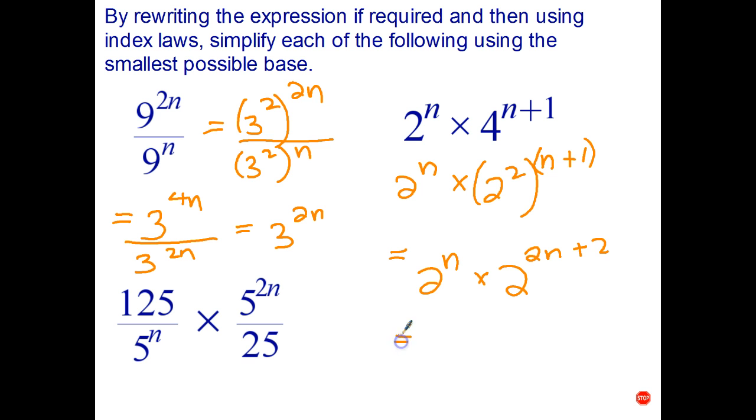And the last step: to multiply powers with the same base add indices, n plus 2n plus 2, and all of that simplifies to 2 to the n plus 2n is 3n. Whoops, made a mistake, let's fix that. All that simplifies is 2 to the 3n plus 2.